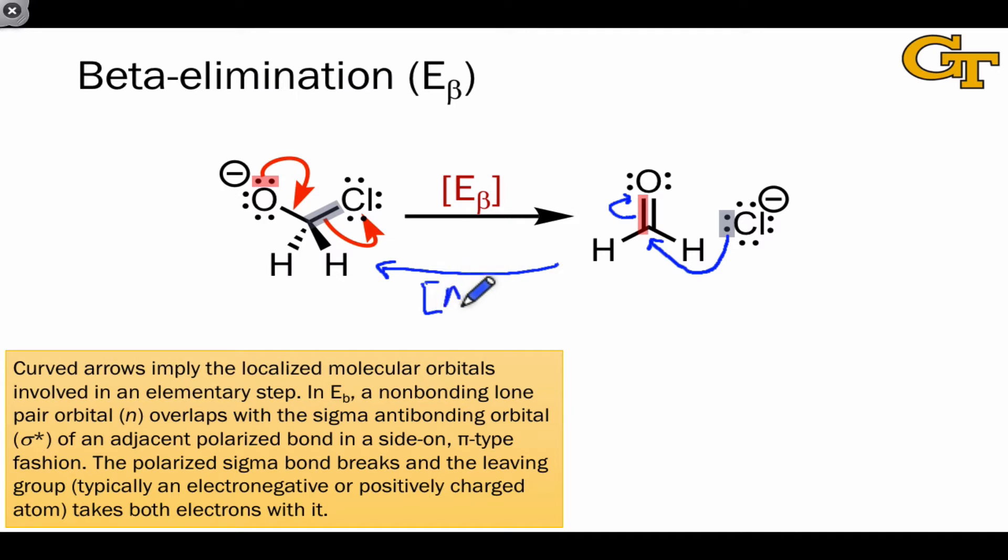This corresponds to a nucleophilic addition, or AD sub n, elementary step. Beta elimination is the reverse of this and involves donation of a non-bonding lone pair toward a sigma-star antibonding orbital with the formation of a new pi bond.